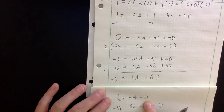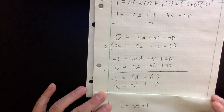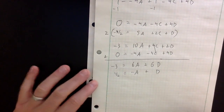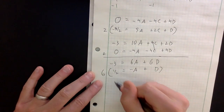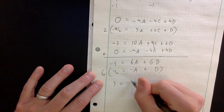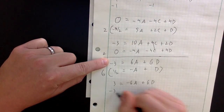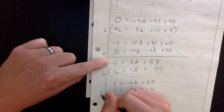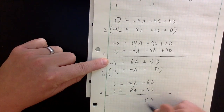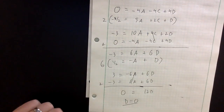Bringing back equation one: one half equals minus A plus D. I multiply everything by 6 to get 3 equals minus 6A plus 6D. Adding this to the equation minus 3 equals 6A plus 6D, the A terms cancel and I get 12D equals 0, so D equals 0.